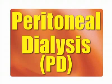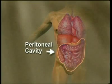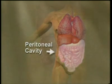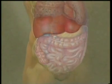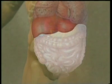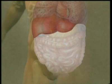Peritoneal dialysis, or PD, is a form of dialysis which occurs inside the body and is performed as a home therapy. PD uses your peritoneal membrane, the lining of your abdomen, as a filter.